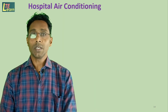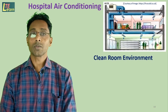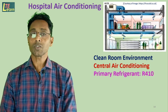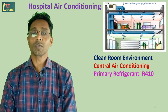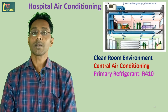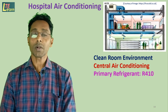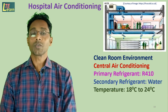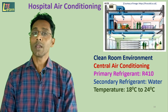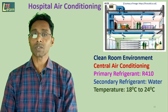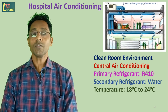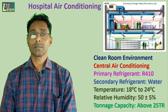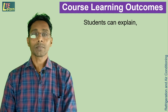Hospital air conditioning: A clean room environment is required, so a lot of care is needed and central air conditioning systems are used. The primary refrigerant is R410A in a VCRS, which cools chilled water at 4 degrees Celsius. This chilled water then cools the air conveyed to various rooms. Room temperature ranges from 18 to 24 degrees Celsius with relative humidity of 55%. Tonnage capacity for hospital air conditioning is above 100 TR.